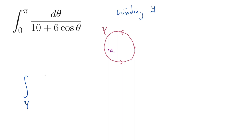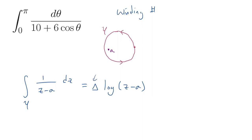We consider the integral along path gamma of 1 over z minus a dz. Trying to evaluate this informally should persuade you why this integral is so important. This has to be the change in the antiderivative, and the antiderivative is log of z minus a. Starting z at z equals 1, z rotates around the unit circle back to the initial place, and we find the change in the logarithm.